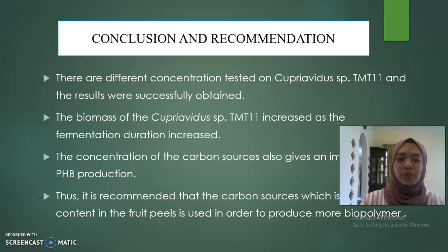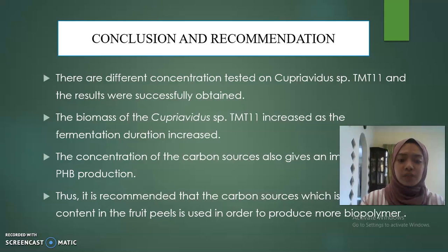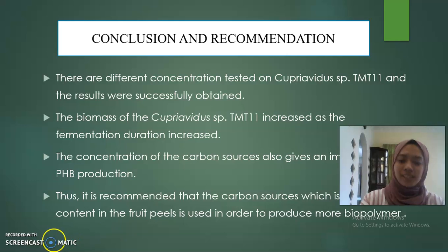For the conclusion and recommendation: different concentrations were tested on Cupriavidus sp. MT11 and the results were successfully obtained. The biomass of the MT11 increased as the fermentation duration increased. The concentration of the carbon source also gives an impact to the PHA production. Thus, it is recommended that the carbon source, which is the glucose content in the fruit peel, is used in order to produce more biopolymer. Thank you.